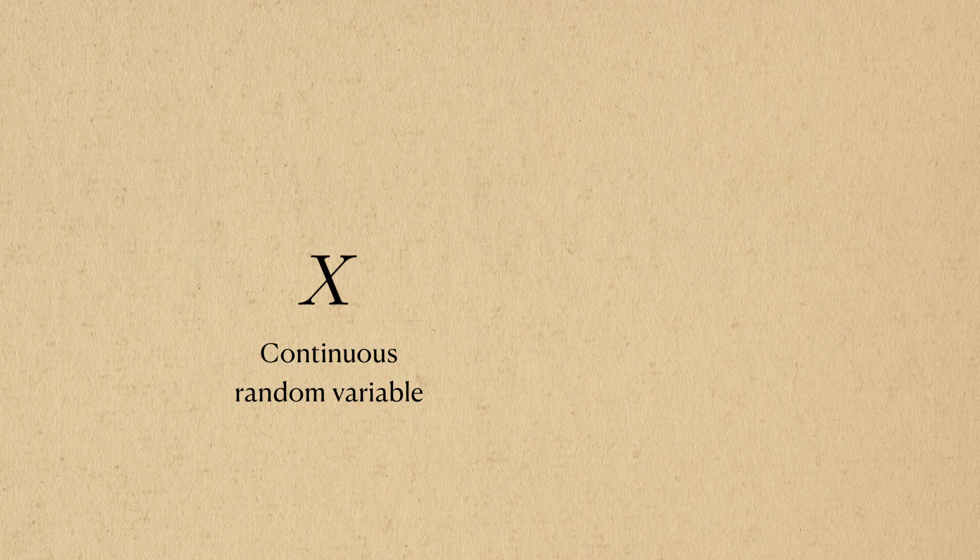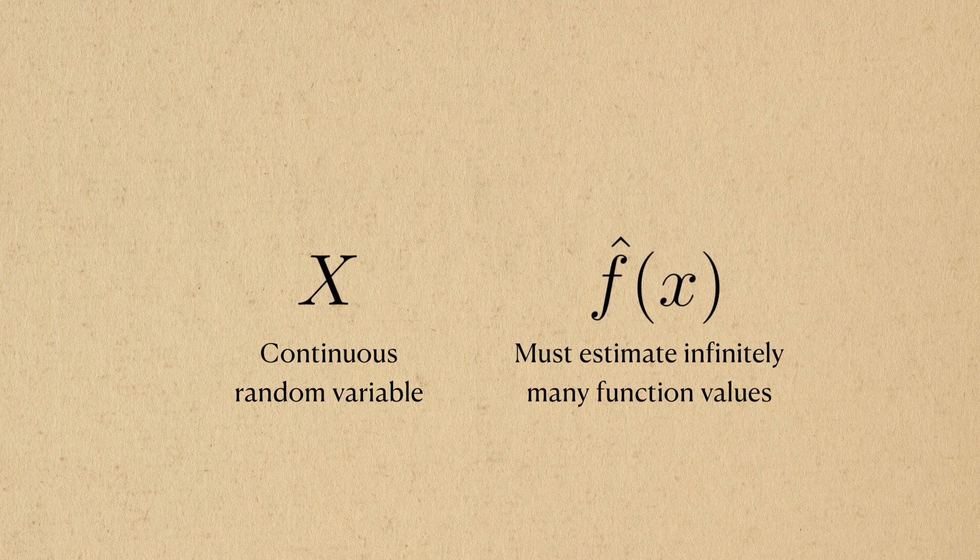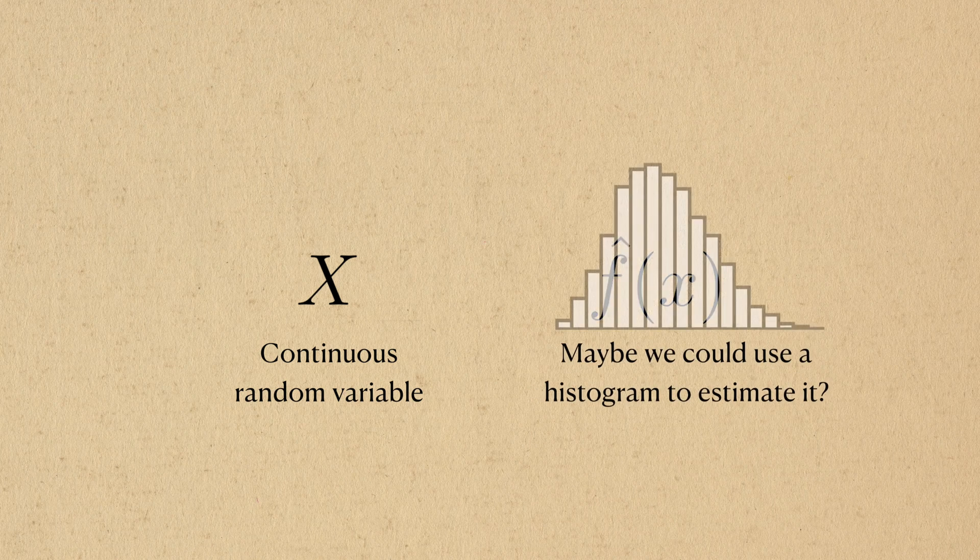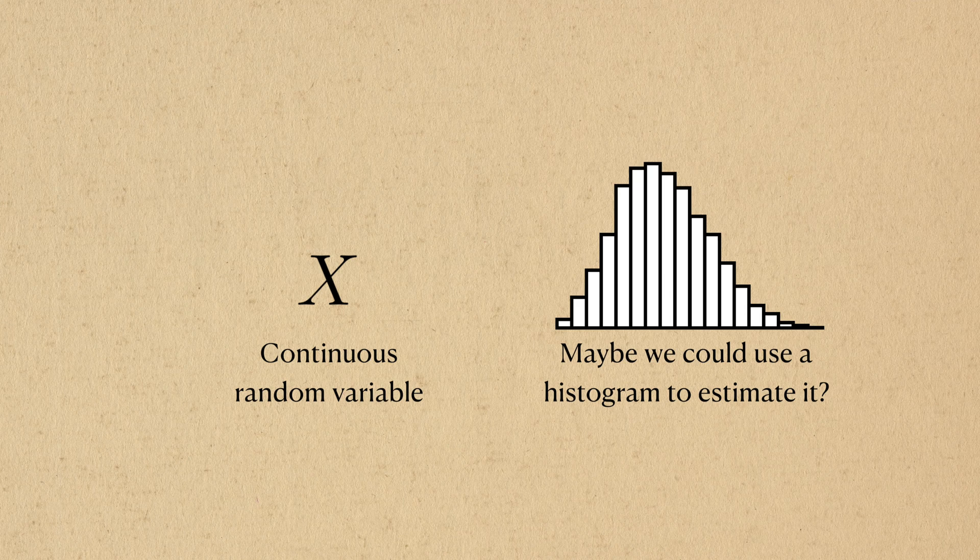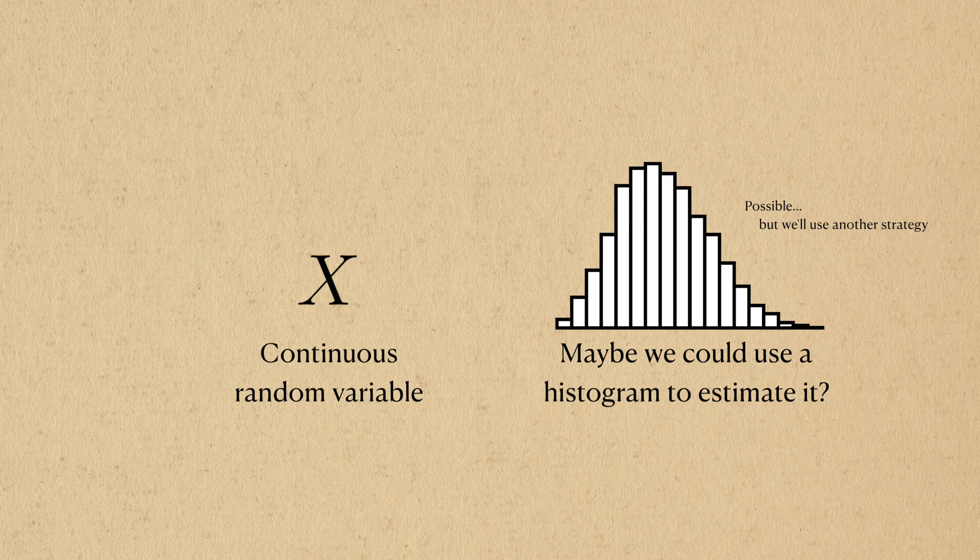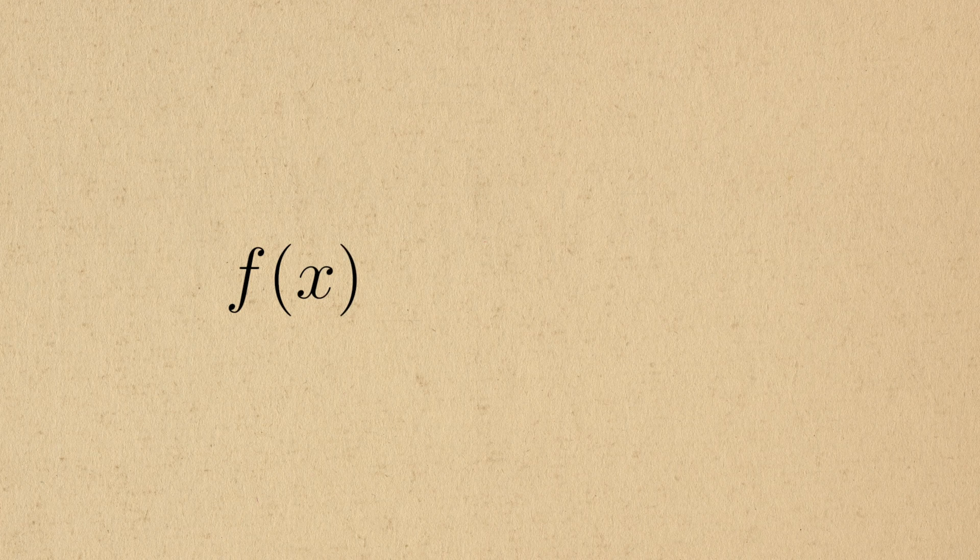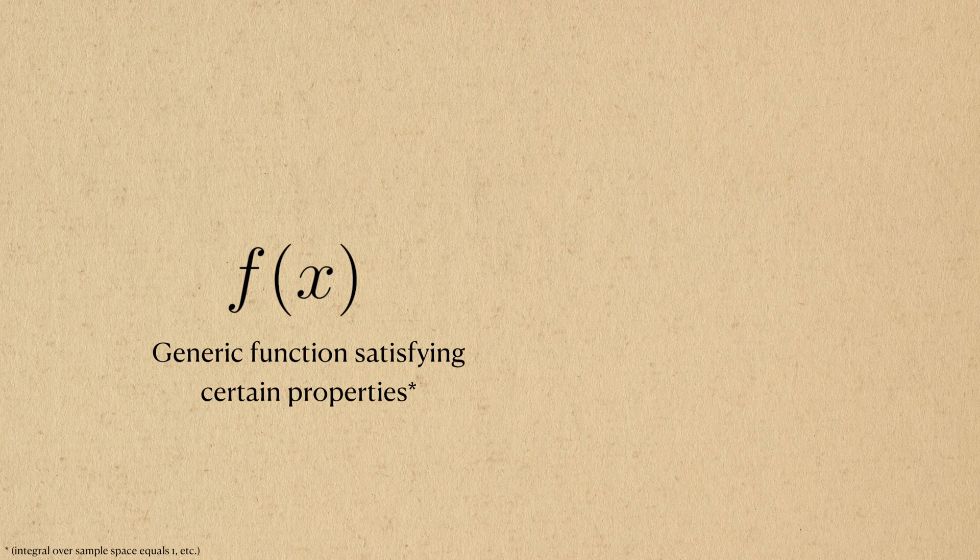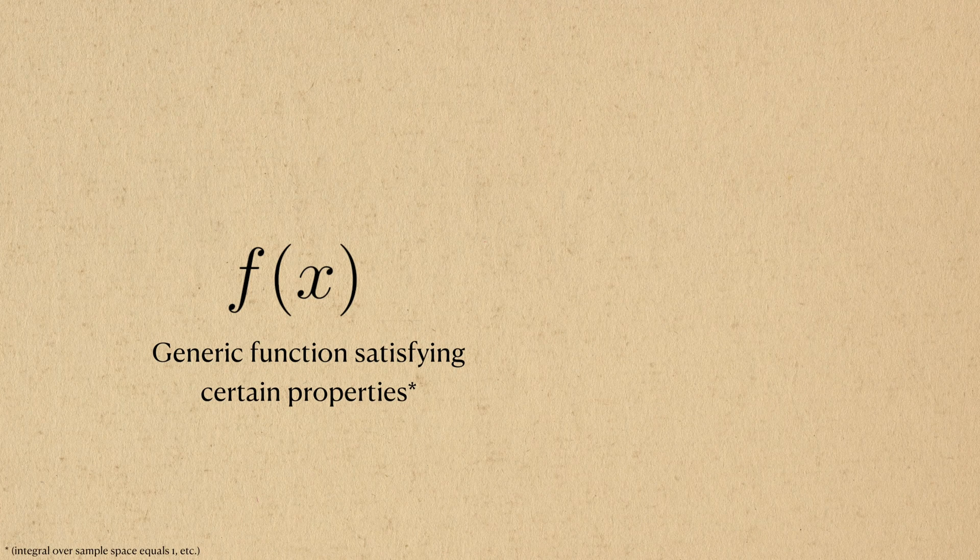For continuous random variables, we'd have to calculate infinitely many values to estimate it. We could try binning values and estimate the probability distribution with the histogram. This is fine, but for the purposes of this training video, we'll assume another strategy that can easily give us the function we want.